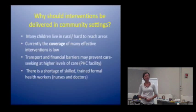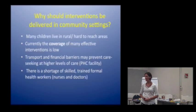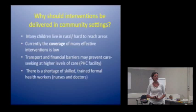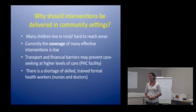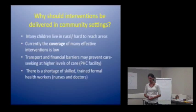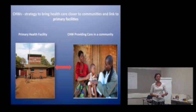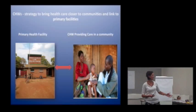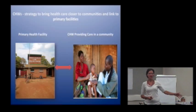Many effective interventions, particularly preventive ones like breastfeeding and immunizations, have low coverage even though they're part of our primary healthcare package. Transport and financial barriers prevent people from travelling to fixed-site facilities. In South Africa and sub-Saharan African countries, there is a shortage of skilled health providers, particularly nurses, for primary healthcare. Community health workers really form a link between our primary healthcare facilities and communities, and that is an important aspect of their role.